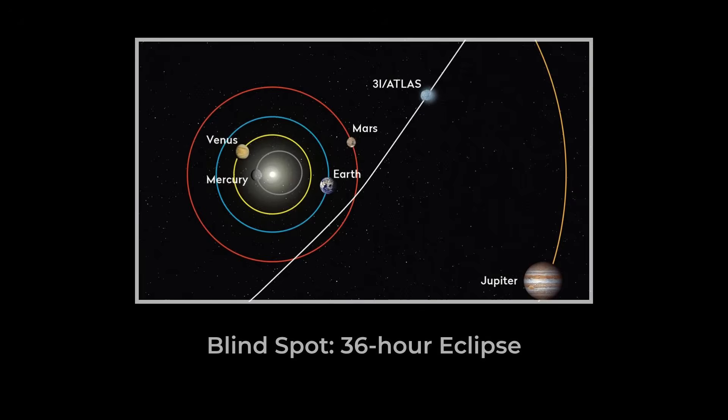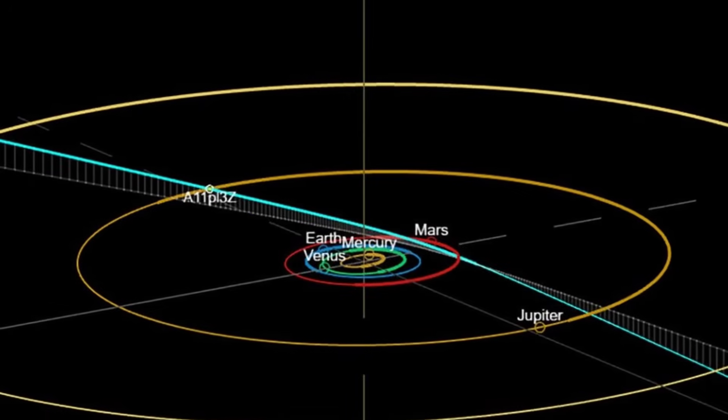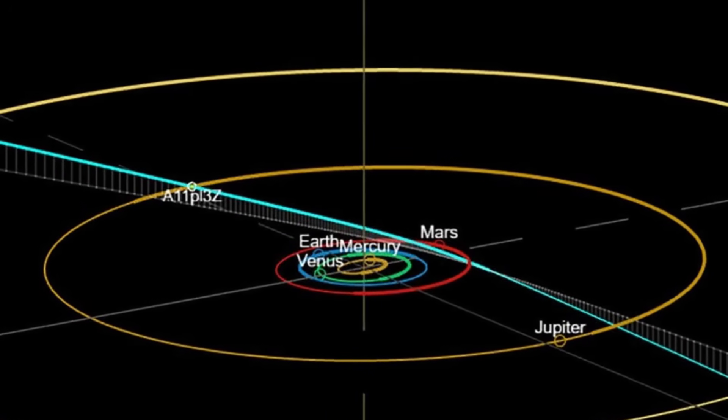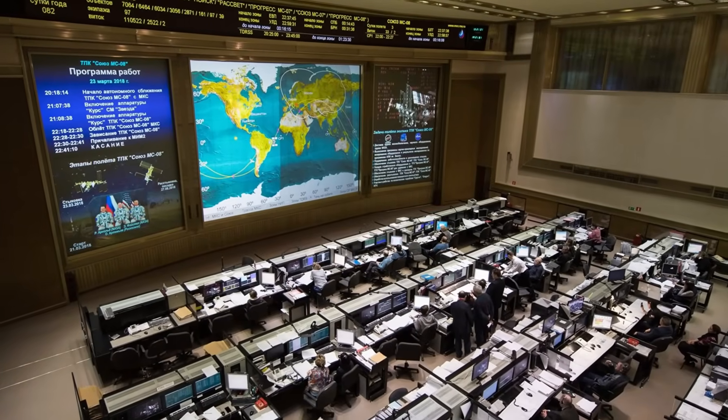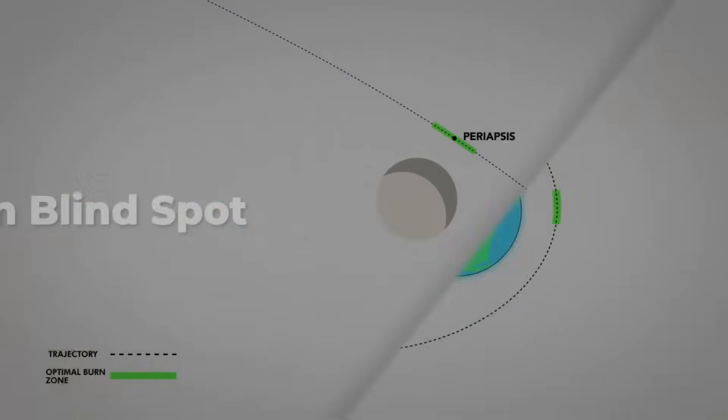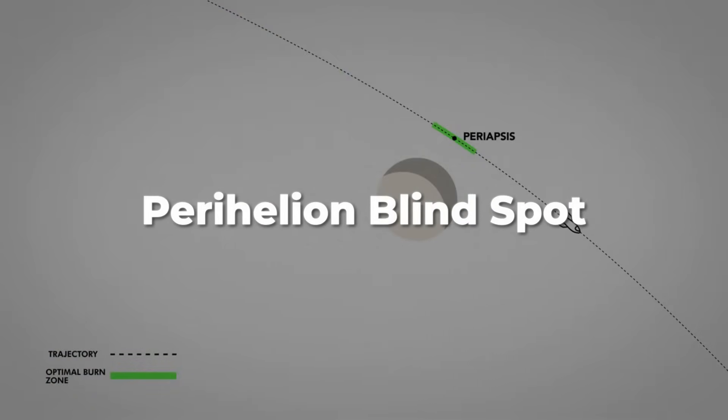Sun, comet, and Earth line up almost perfectly, creating a natural blind spot that even the most advanced observatories can't pierce. This is not just a curiosity of orbital mechanics. In the world of spaceflight, this window is the prime opportunity for a maneuver called the Oberth effect.